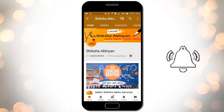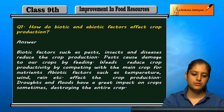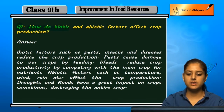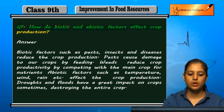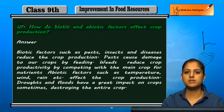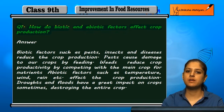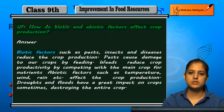Let us discuss a few questions. First question: how do biotic and abiotic factors affect crop production? Both living and non-living factors affect crop production. The biotic factors are the living factors that can affect crop production.